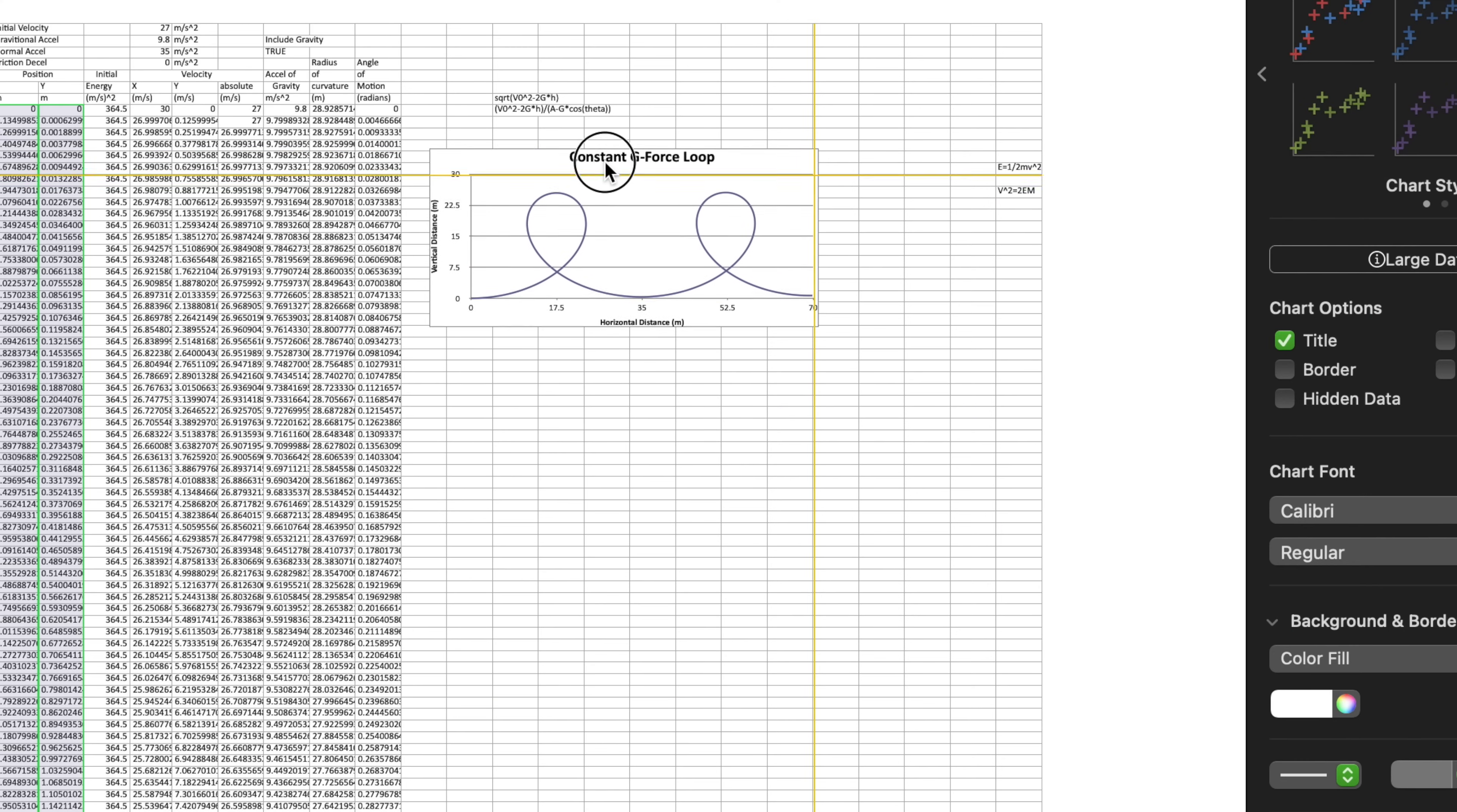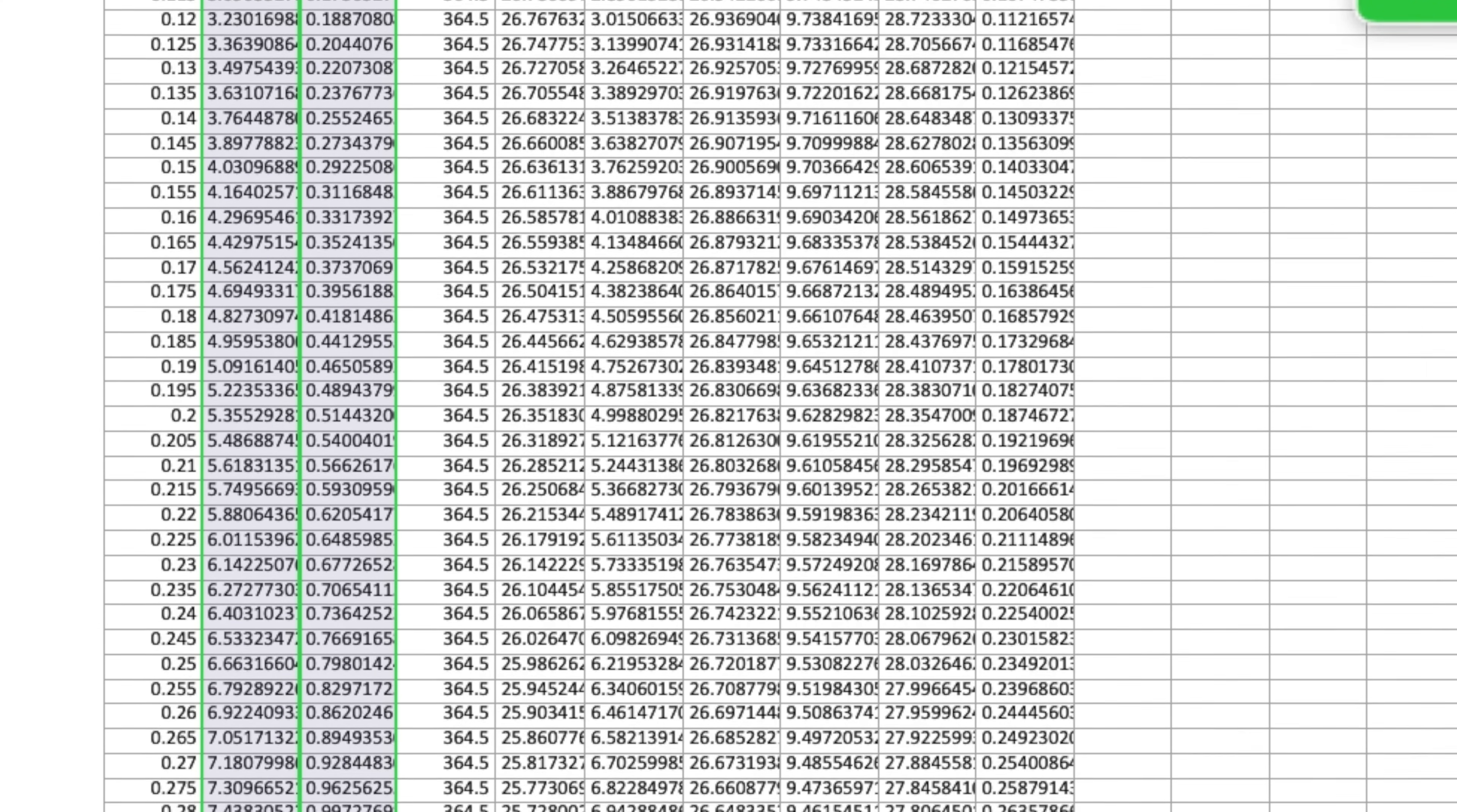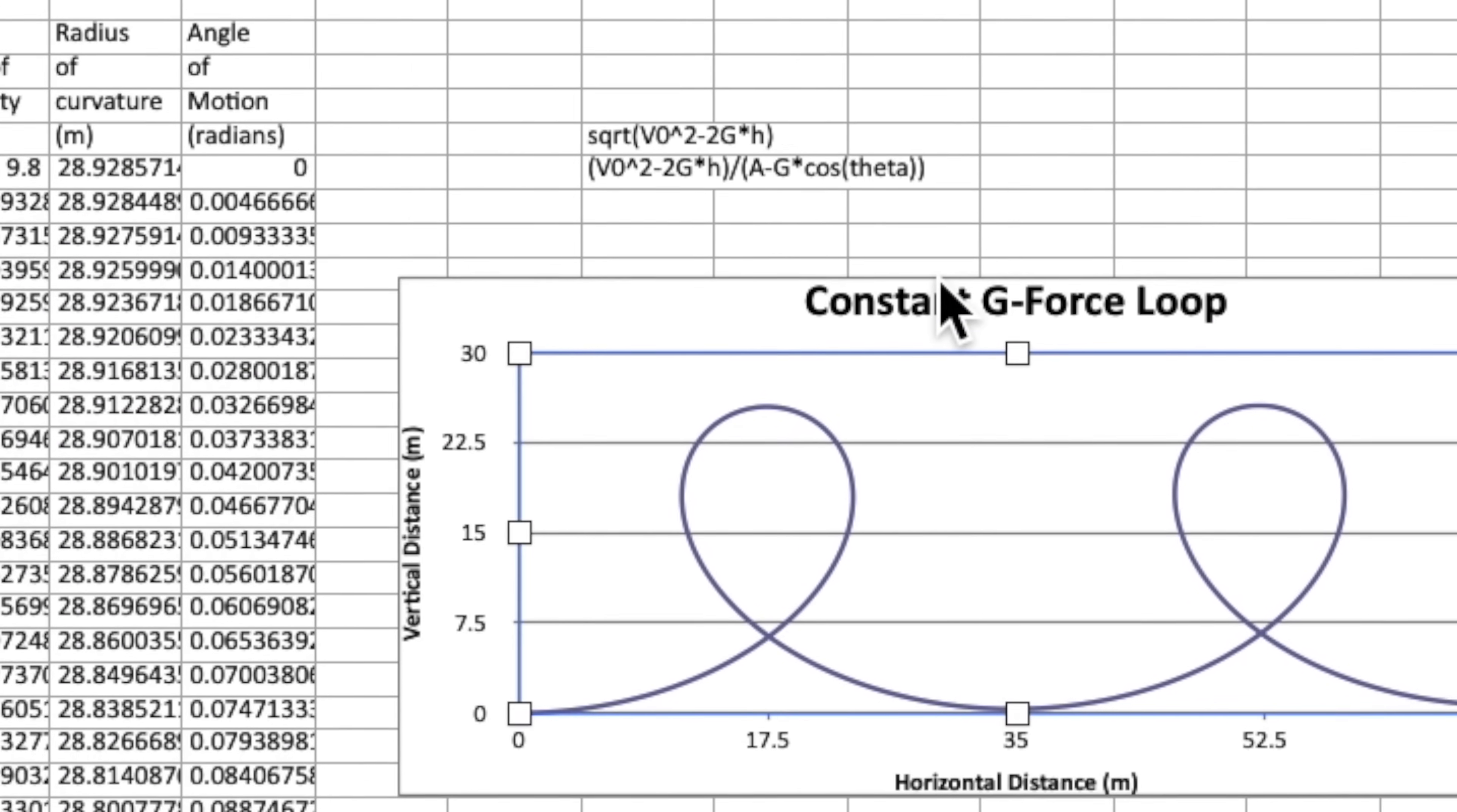A while back I actually modeled this using a spreadsheet. Basically what it does is it iterates over a very small fraction of time and calculates the coordinates of the loop, the new velocity, and the new radius of curvature. And then it plots it on this scatter plot.